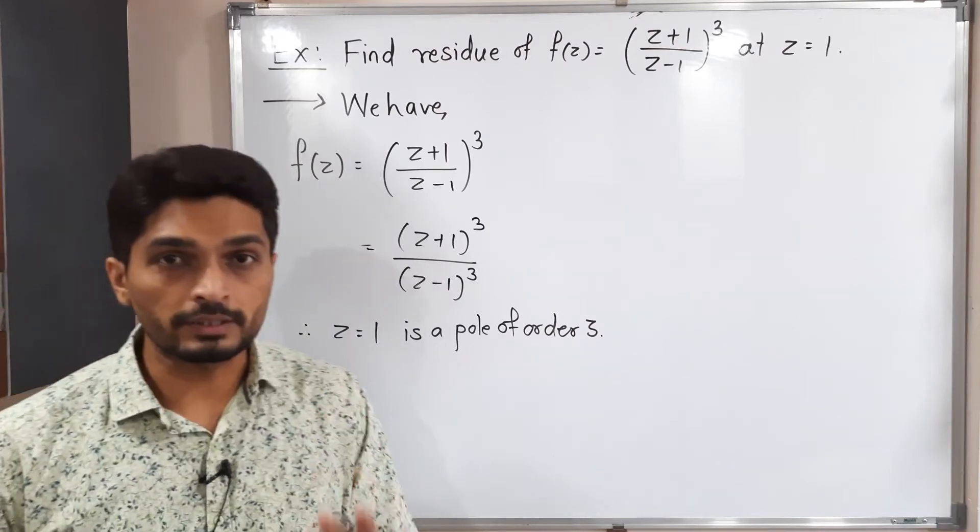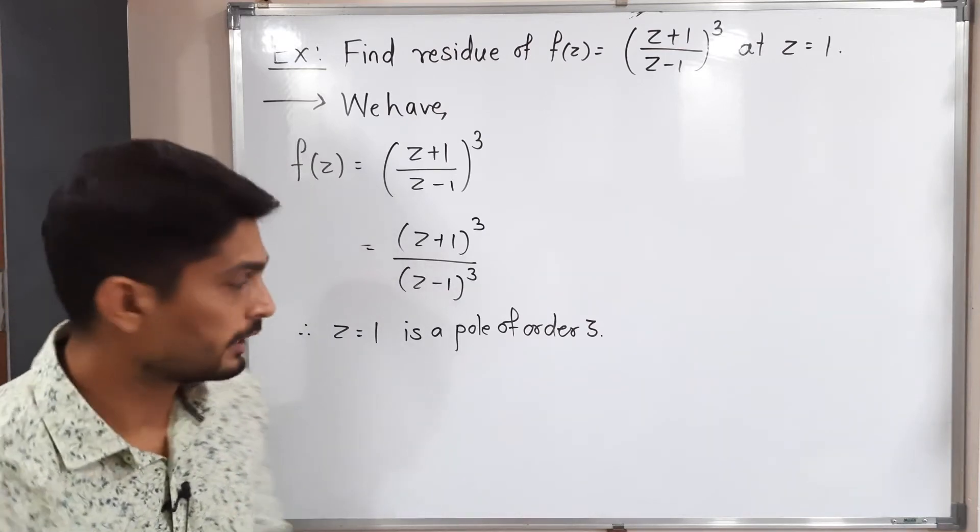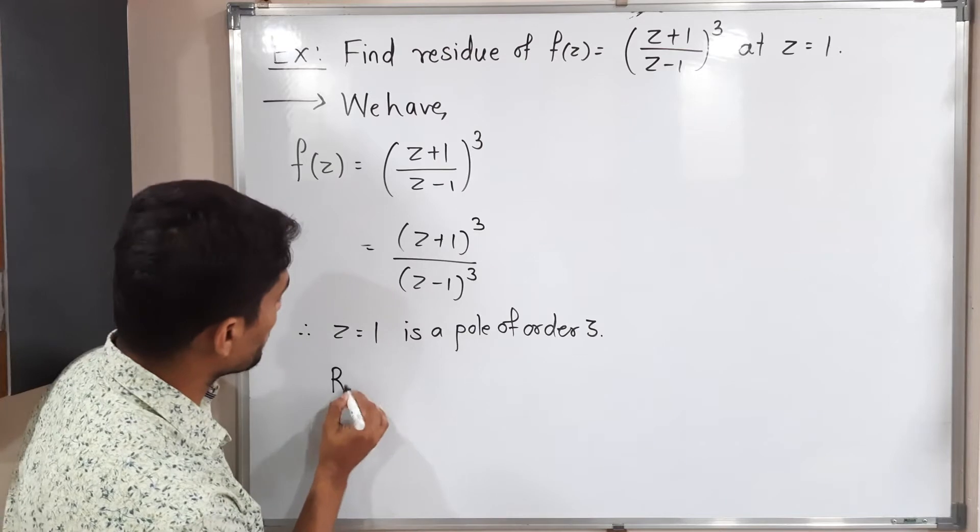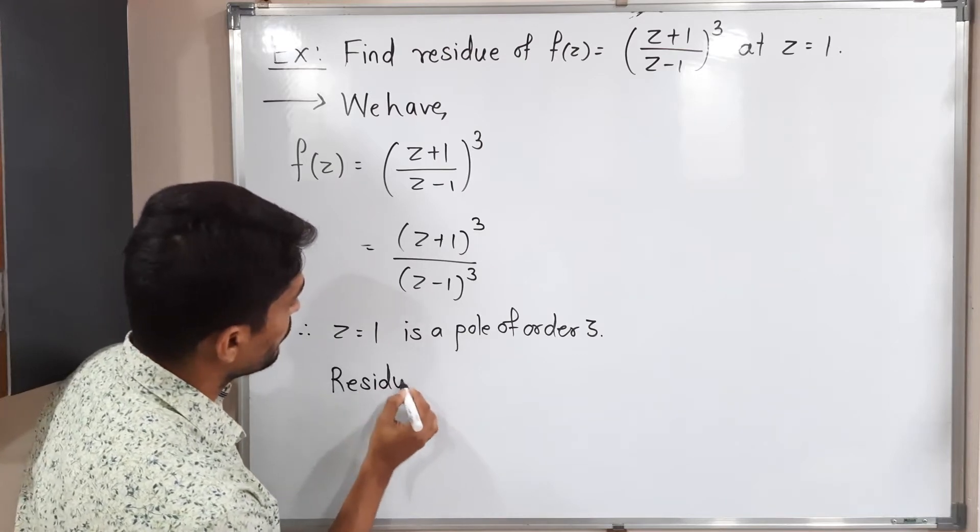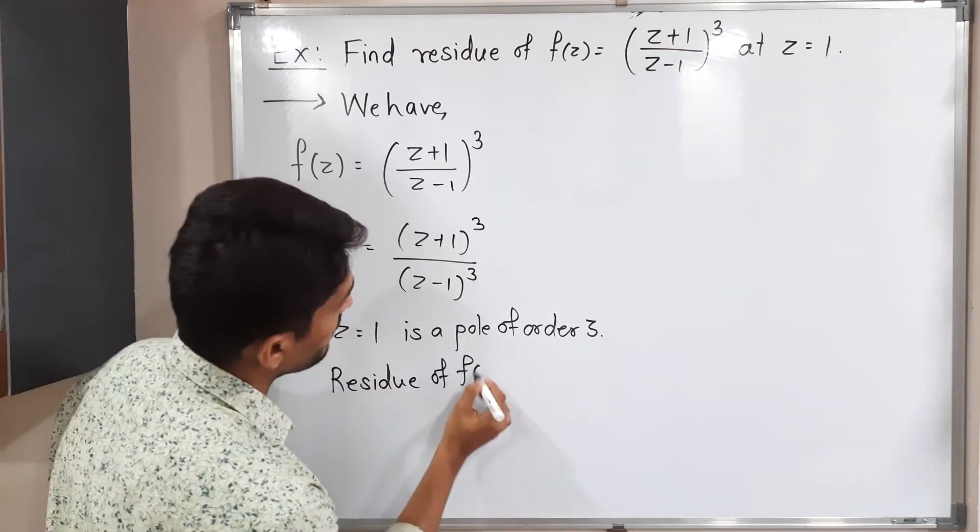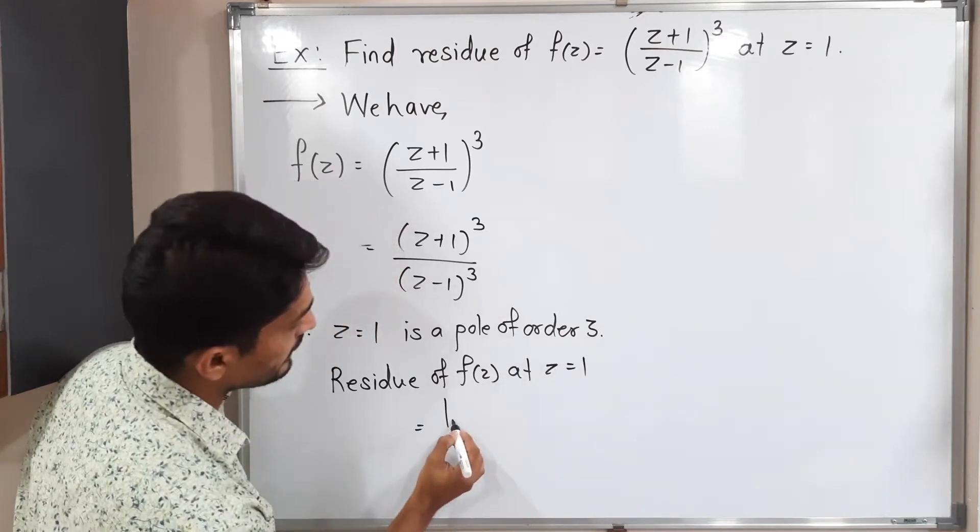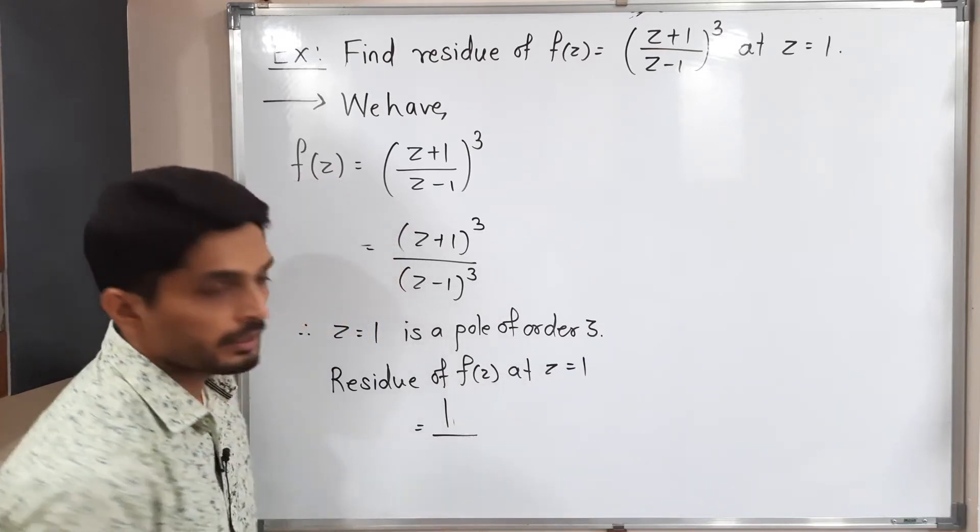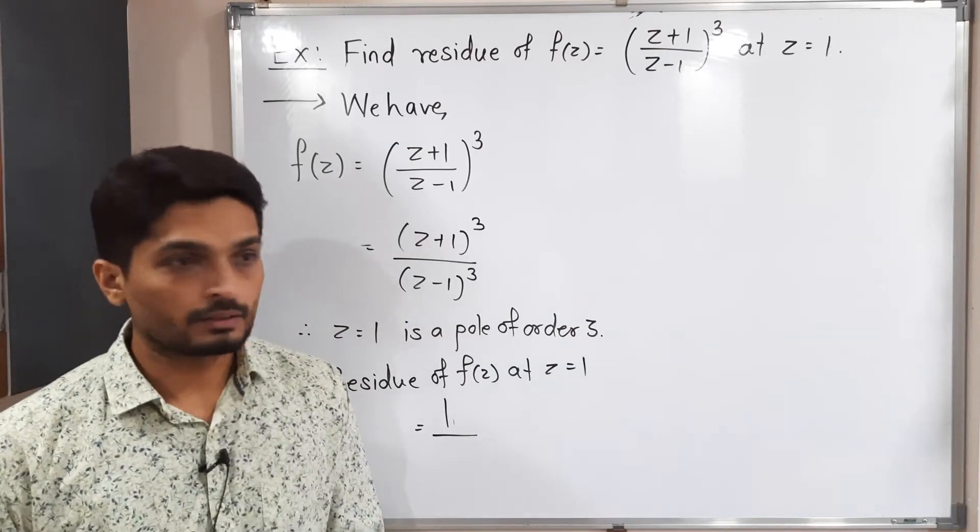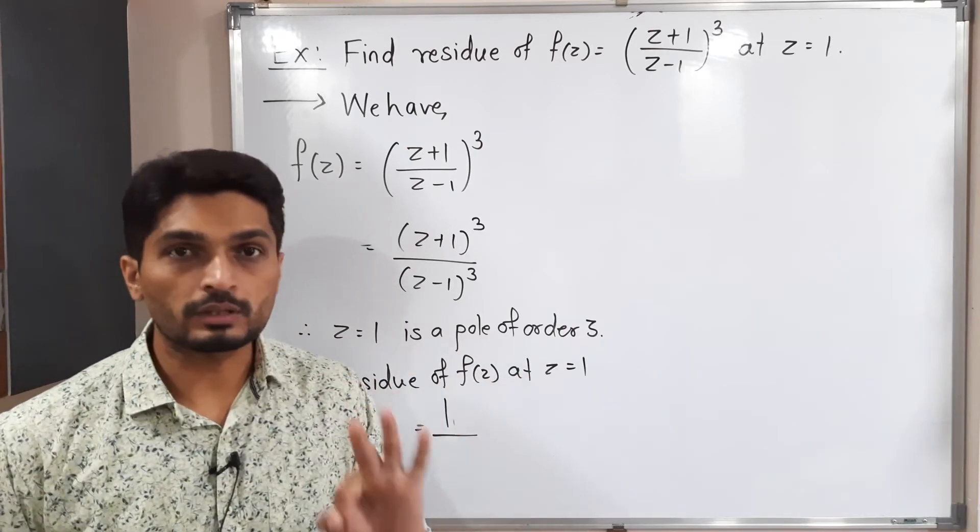So this is pole of order 3, so I should go for the last formula. Let us use it. Let me write residue of f(z) at z is equal to 1. The formula says 1 upon n minus 1 factorial. So the order is 3, so 3 minus 1, 2 factorial.